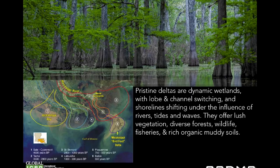The Mississippi is a great example — very dynamic wetlands. In the Mississippi, they had all this lobe switching, and within each lobe there was channel switching and a shift of the locus of deposition over time. While the delta was in a certain location, it received a lot of sediment and was worked on by rivers, waves, and tides. Very lush vegetation, wildlife, fisheries. Generally deltas are muddy, but they don't all have to be — they can be coarse-grained material.